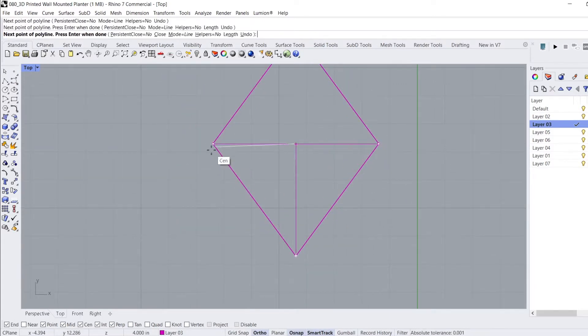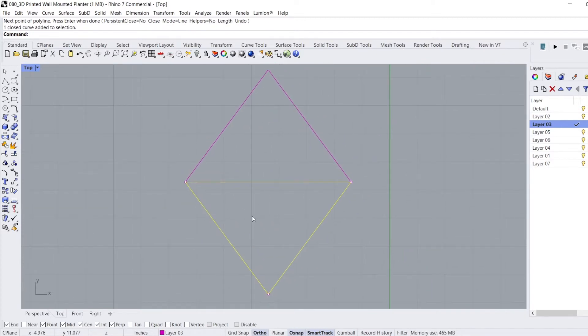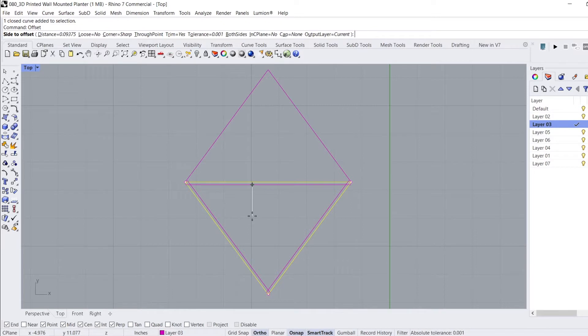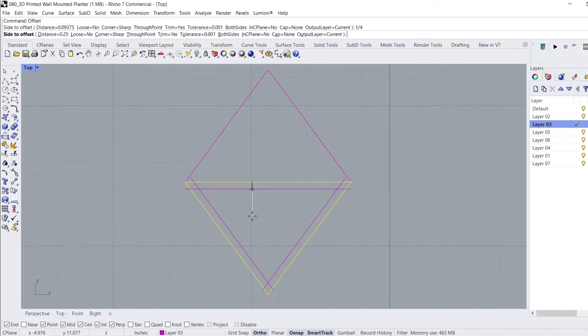For the planter, I use the Polyline command to trace the bottom half of the diamond to get a triangle shape and use the Offset command to pull it inward by half of an inch.